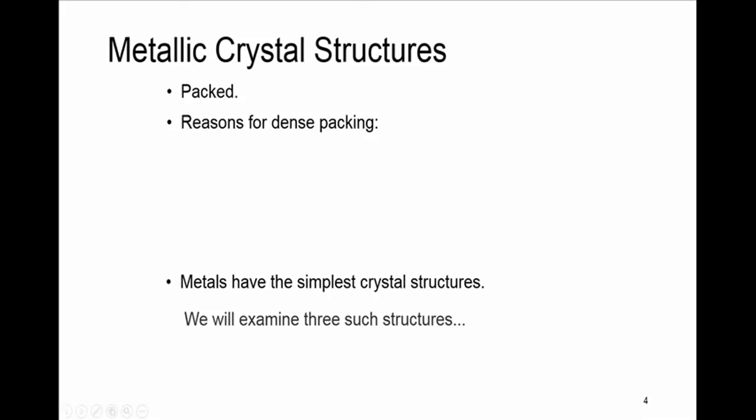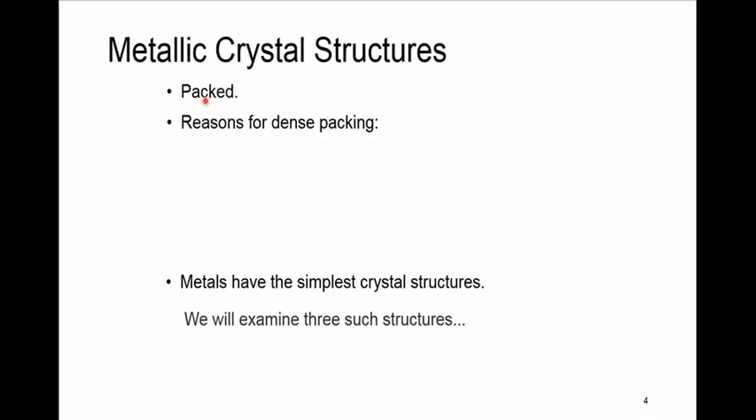In metals, crystal structures tend to be densely packed. The reason for dense packing is that typically only one element is present, so all atomic radii are the same. Metallic bonding is not directional — that's the second reason. The third reason is that nearest neighbor distances tend to be small in order to lower bond energy, and the electron cloud shields cores from each other.